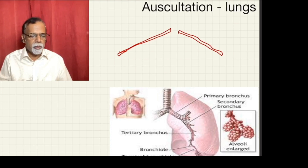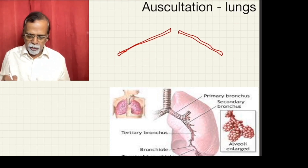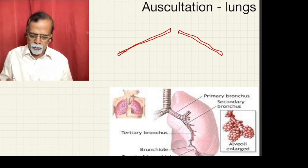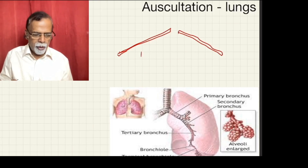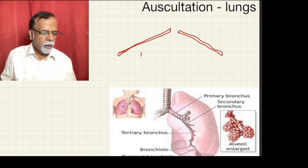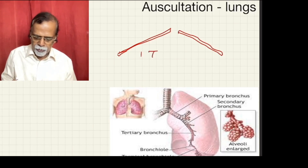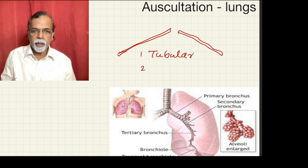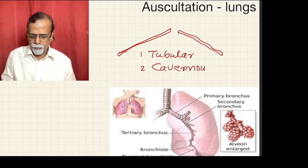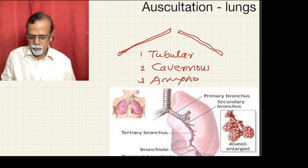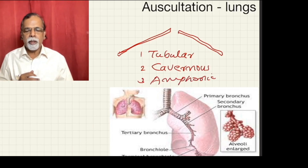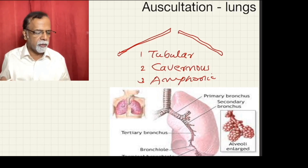Let us look into the types of bronchial breathing. Bronchial breath sounds are divided into: one, the high-pitched sound otherwise called the tubular breath sound; second is low-pitched bronchial breath sound otherwise called the cavernous breath sound; and third, there is a type of breath sound called amphoric breath sound. These are the types we should be familiar with.